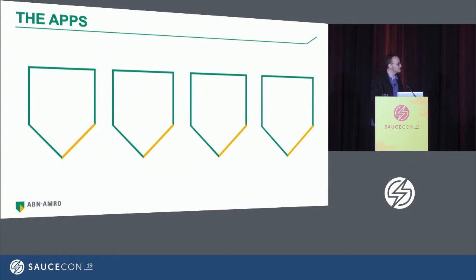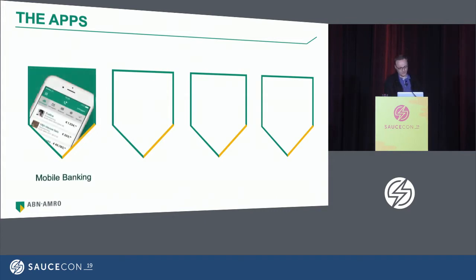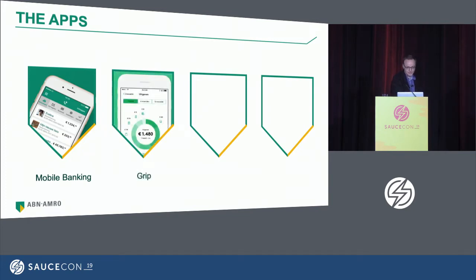ABN AMRO is a bank, so not the most exciting company probably. But we do a lot of mobile native applications. We have the mobile banking app, which is the main application — where you keep track of your bank accounts, your mortgage, your insurances, and things like that. But we also have some more fun applications like Grip, that allows you to analyze if you're spending too much on going out in a month.